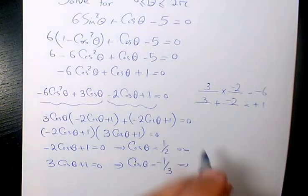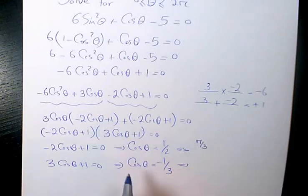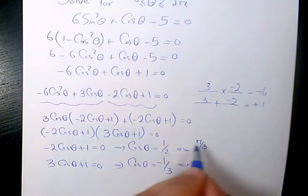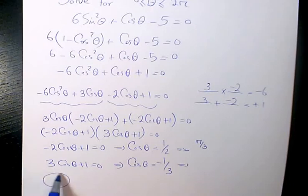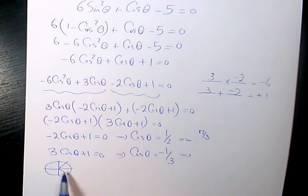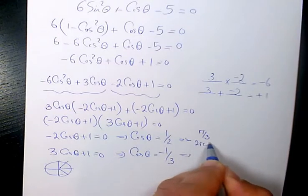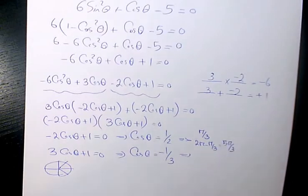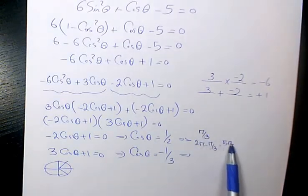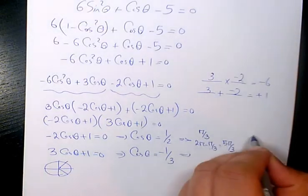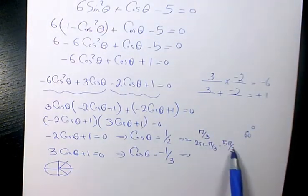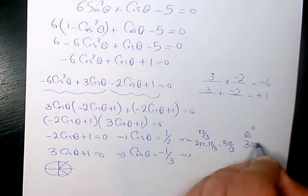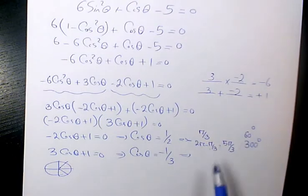For cosine theta equals 1 over 2: we know cosine of pi over 3 equals 1 over 2, so one answer is pi over 3 in quadrant 1. The other answer is in quadrant 4 where cosine is also positive: 2 pi minus pi over 3 equals 6 pi over 3 minus pi over 3 which is 5 pi over 3. In degrees these are 60 degrees and 300 degrees.